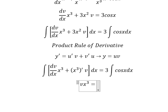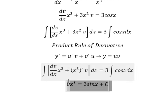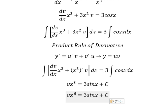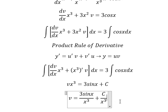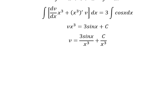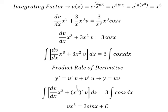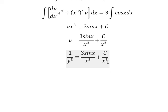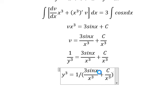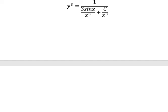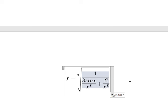The integration of cosine x gives us sine x. Next, we divide both sides by x to the power of 3. So we put this one to the left and this one to the right. Now, we put the cube root for both sides. And this is the final answer.